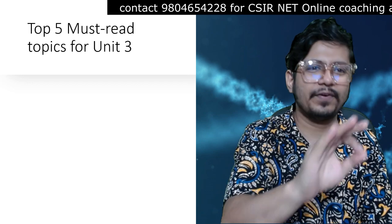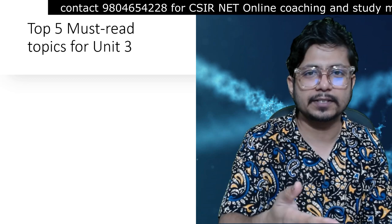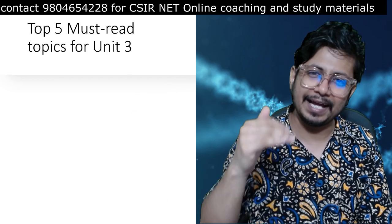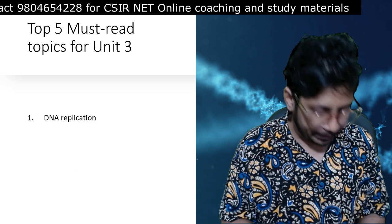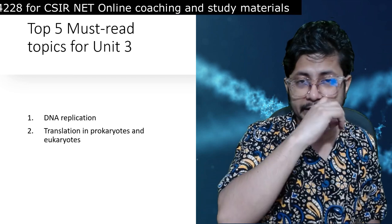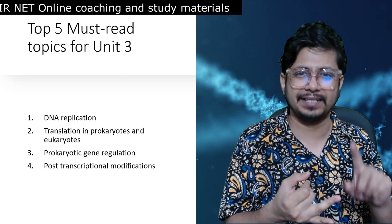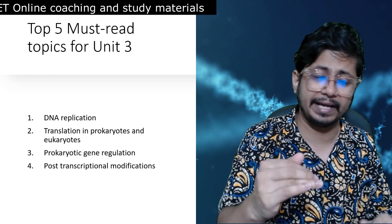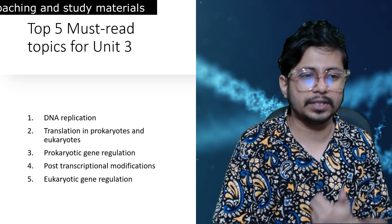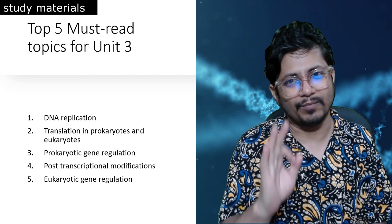Now we are going to talk about the top five must-read topics for CSIR NET Life Science Unit 3 syllabus. The first topic is DNA replication — most important. The second is translation in prokaryotes and eukaryotes — translation initiation, pre-translation events, and post-translation events. Third is prokaryotic gene regulation. Fourth is post-transcriptional modification — splicing processes, polyadenylation, capping, and RNA editing. And fifth is eukaryotic gene regulation, particularly the initiation of eukaryotic transcription, involvement of upstream control elements, and transcriptional repressors and activators — very very important.